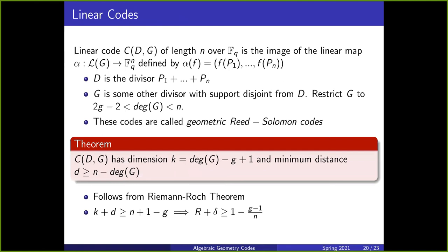Now we define our linear codes. The linear code C(D, G) of length n over Fq is the image of a linear map from the vector space L(G) to Fq^n, defined by evaluation on the set of points p1 through pn, where p1 through pn are the points that D is supported on — D is just the sum of p1 through pn. G will be some other divisor with support disjoint from D, so it's not supported on p1 through pn, and we restrict the degree of G. Codes of this form are called geometric Reed-Solomon codes.